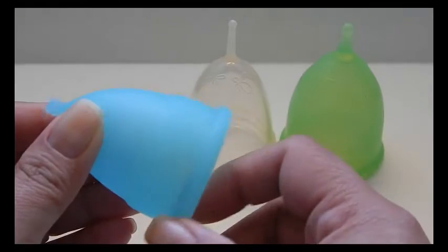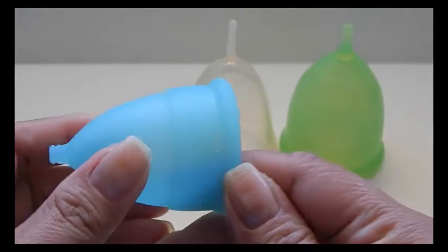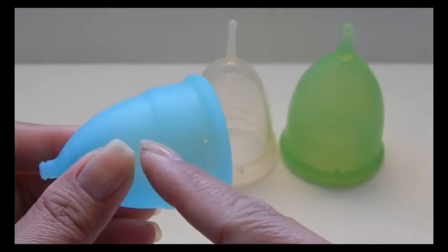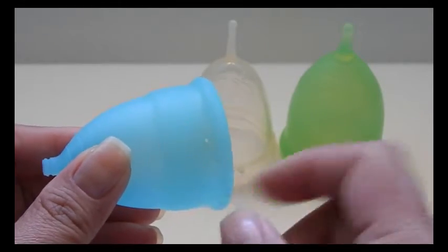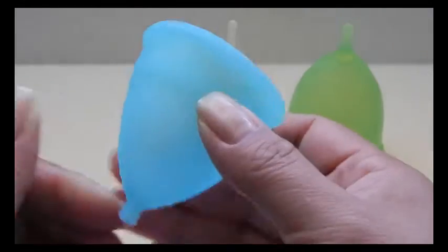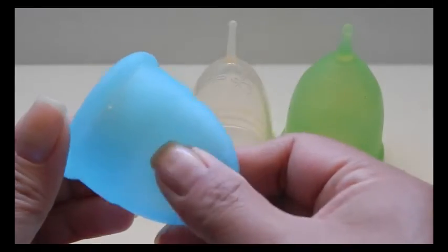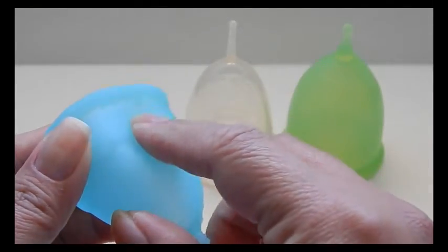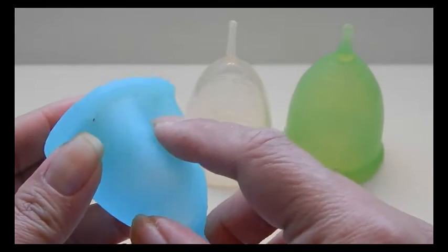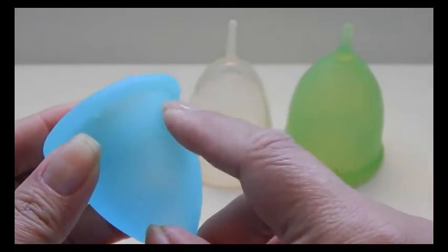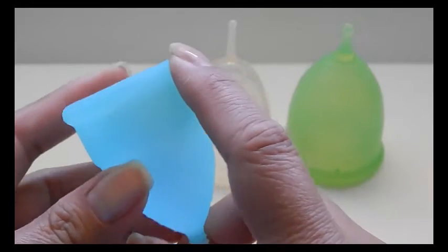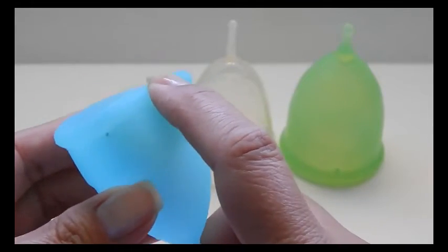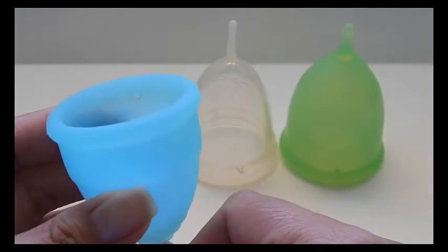I think the thing that really made it work was this secondary rim. It's so high up the cup that it made it a lot easier to get open. The bottom of the cup is nice and soft and then this secondary rim makes it a little bit more firm from this point up into the top rim which is the firmest part of the cup not including the stem.